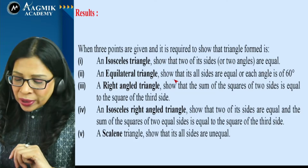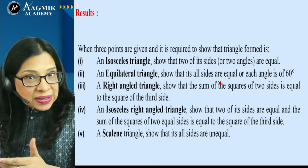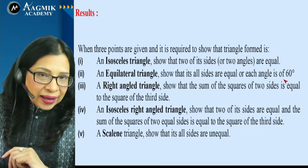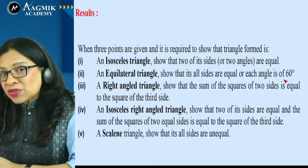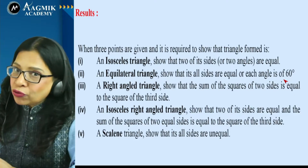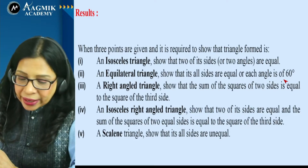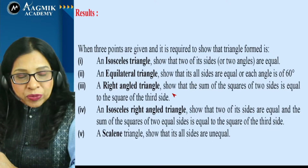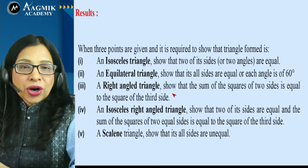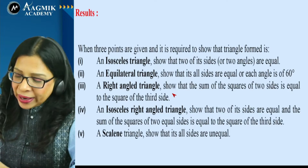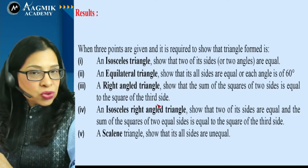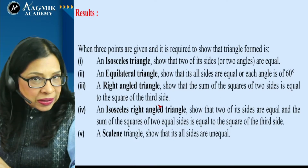For an equilateral triangle, show all three sides are equal or each angle is 60 degrees. Using the distance formula, we show the length of all three sides is equal. For a right-angled triangle, verify Pythagoras theorem — that is, the sum of squares of two sides equals the square of the third side.